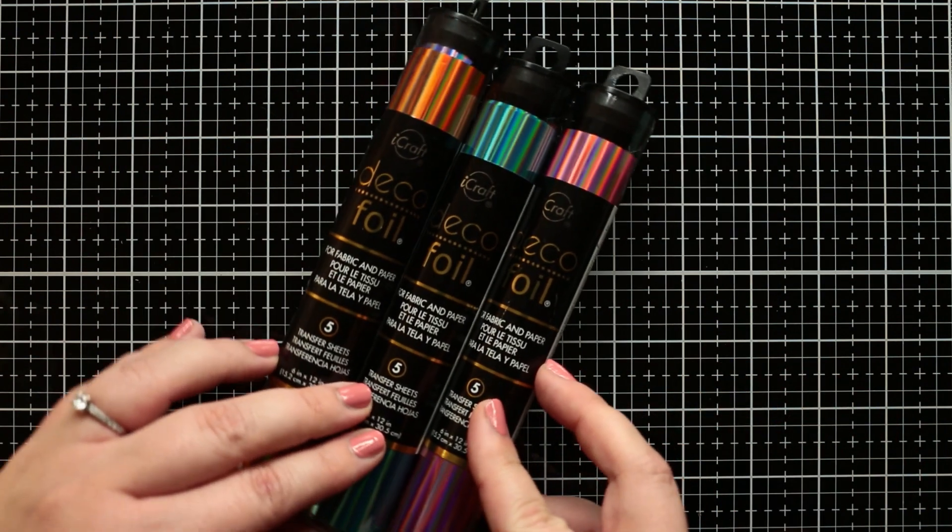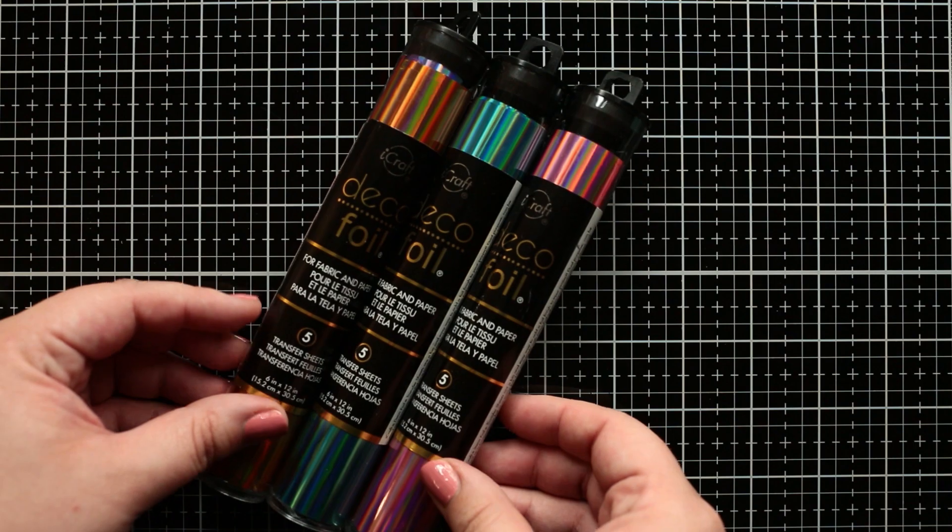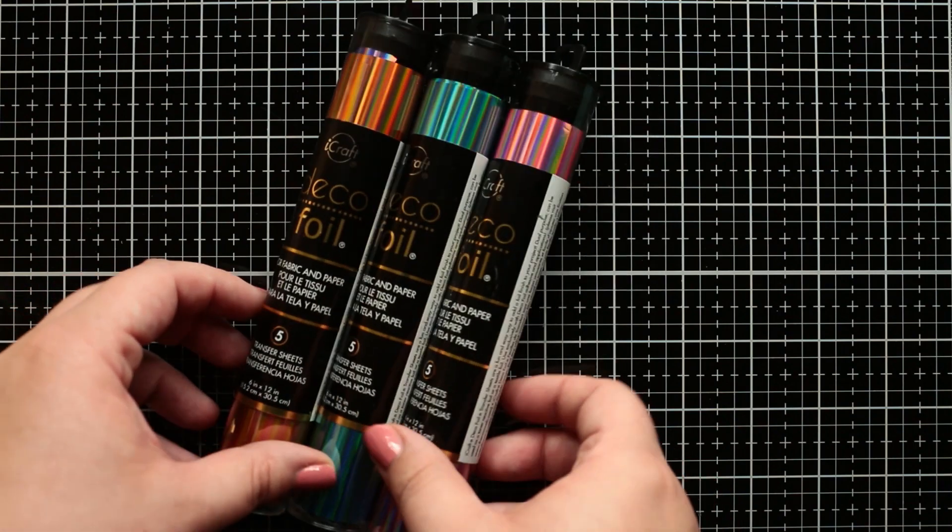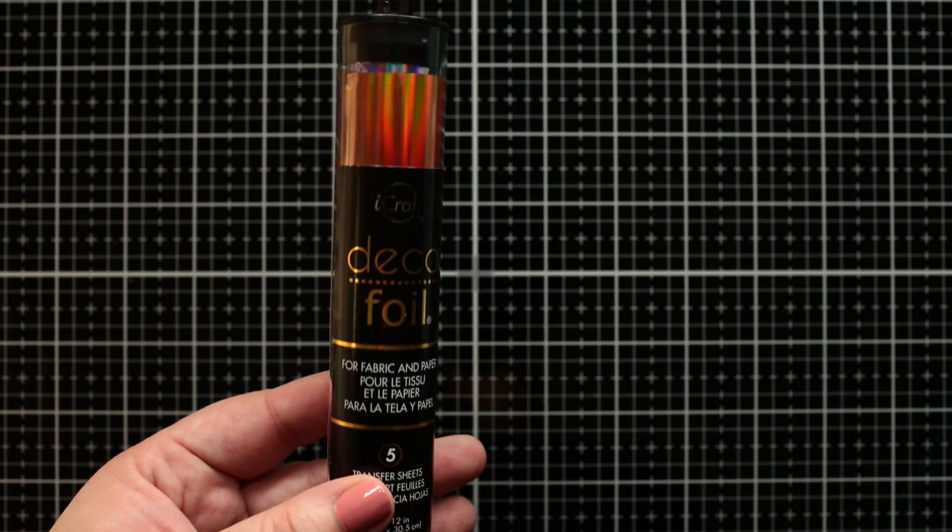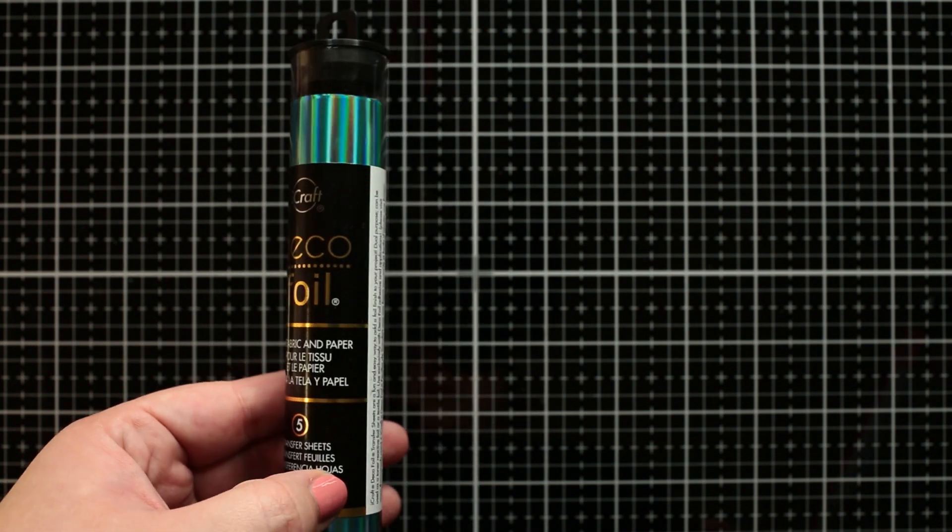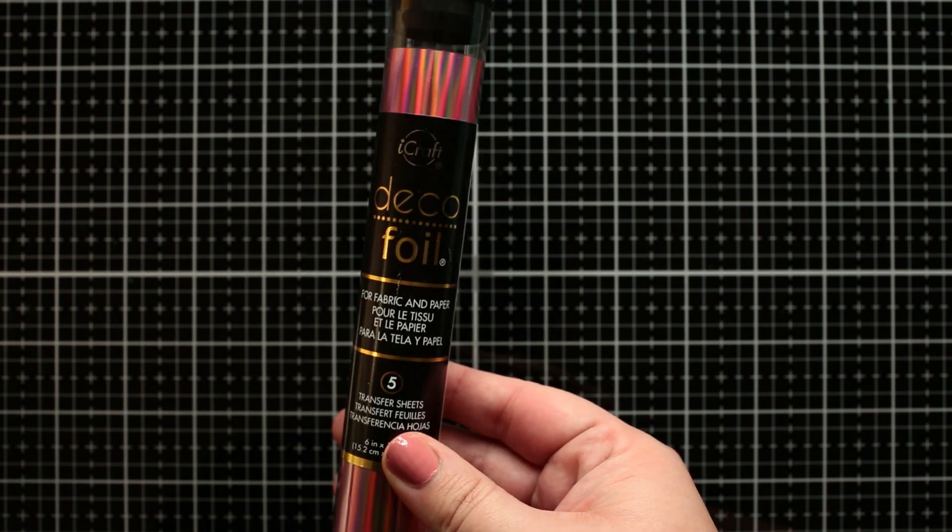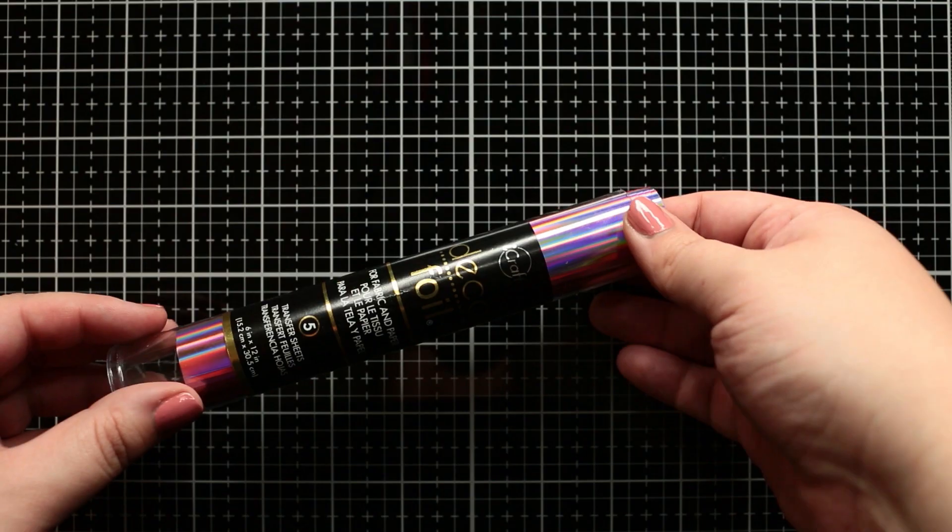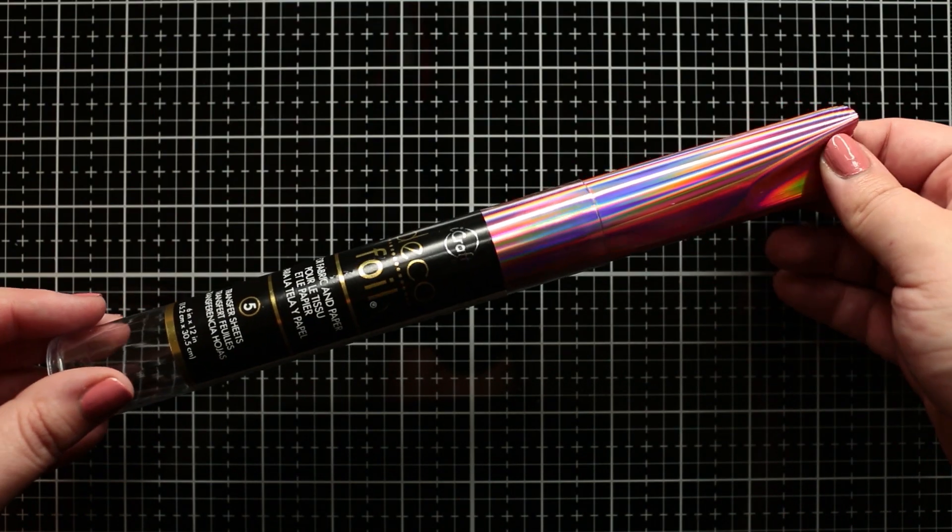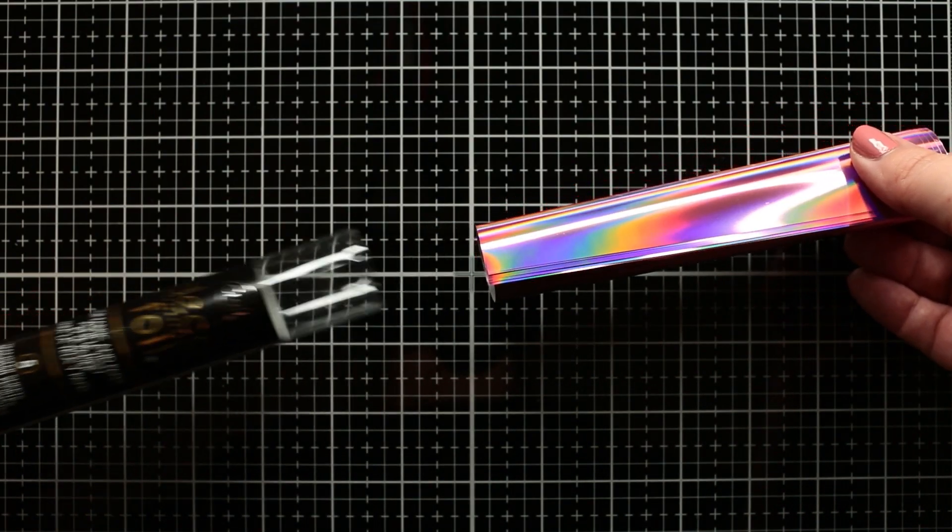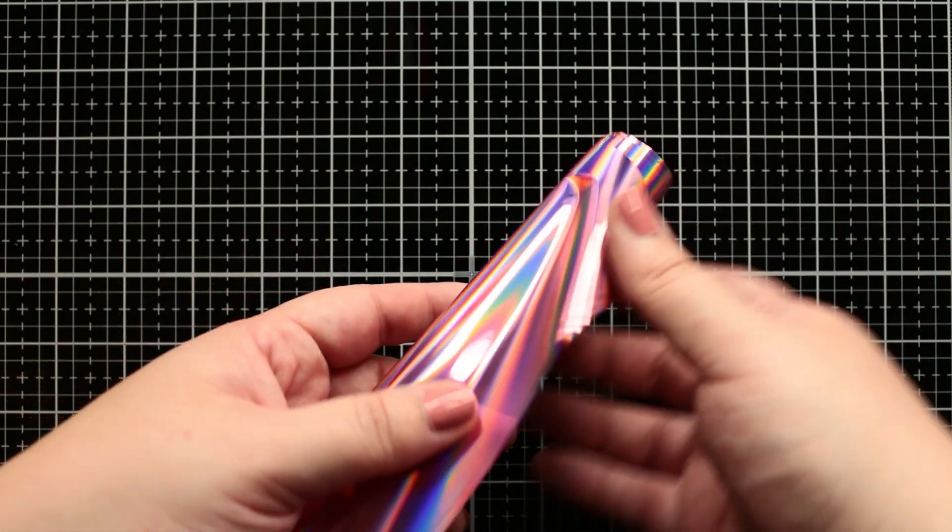Instead of stamping I will use pretty shiny foils on the frames. So I picked the Peach Princess, Glass Slipper and the Enchanted Rose Decofoil transfer sheets which are beautiful and as you can see, they have beautiful reflections as well.